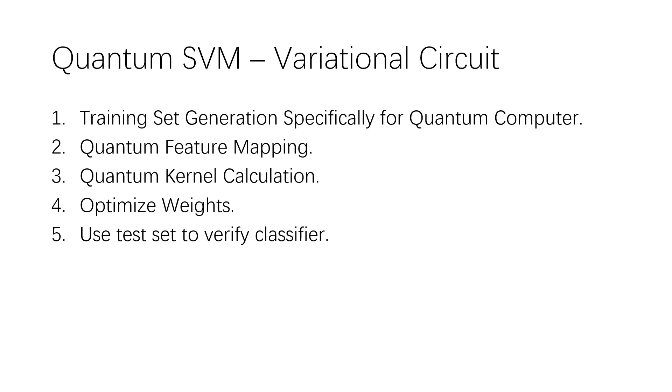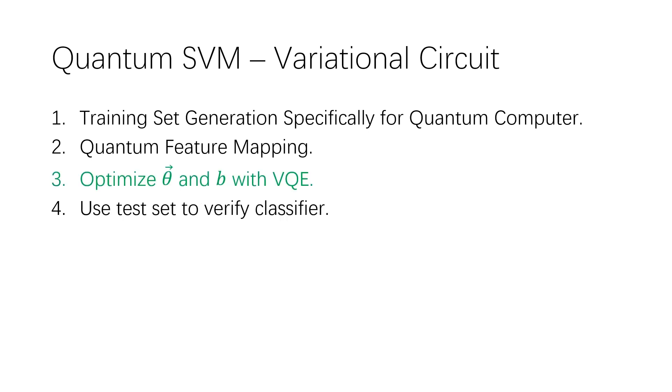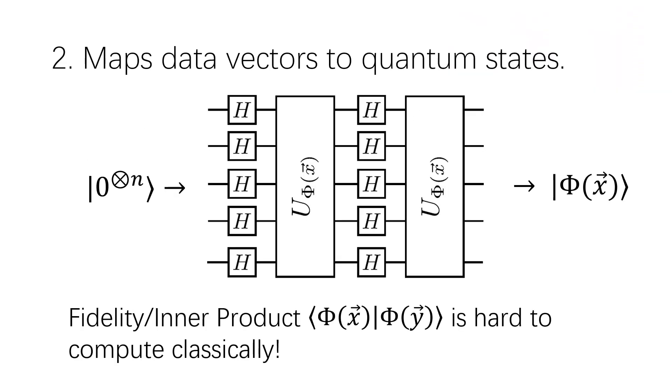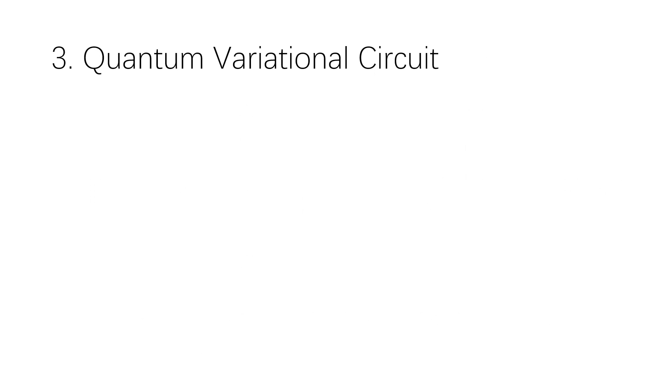The procedures here are similar to the classical and inner product approximation approaches. Except in this case, we will not calculate the kernel, and the optimization is done with the quantum computer. We will use the same generated dataset, map feature vector x on the Bloch sphere. But then in the third step, we apply what is called an ansatz.